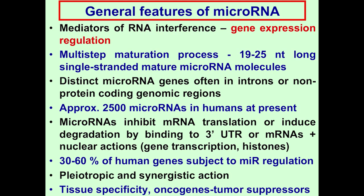But there are novel data that, beside these classical cytoplasmic actions of microRNA, they also have nuclear actions affecting gene transcription and histones, so their activity seems to be much broader than previously established. About 30 to 60 percent of human genes are predicted to be subject to microRNA-based regulation. A very characteristic feature of microRNAs is their pleiotropic action — a single microRNA can have many different messenger RNA targets. Moreover, a single messenger RNA can be targeted by various microRNAs that often act in a synergistic fashion. A very important aspect is their tissue specificity, which relates also to their expression.